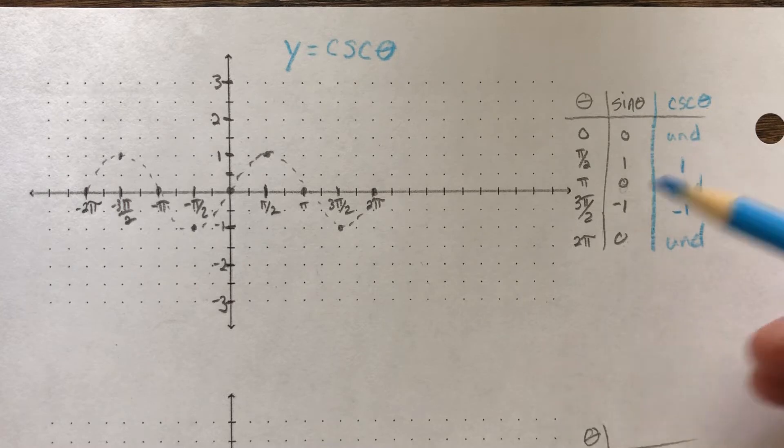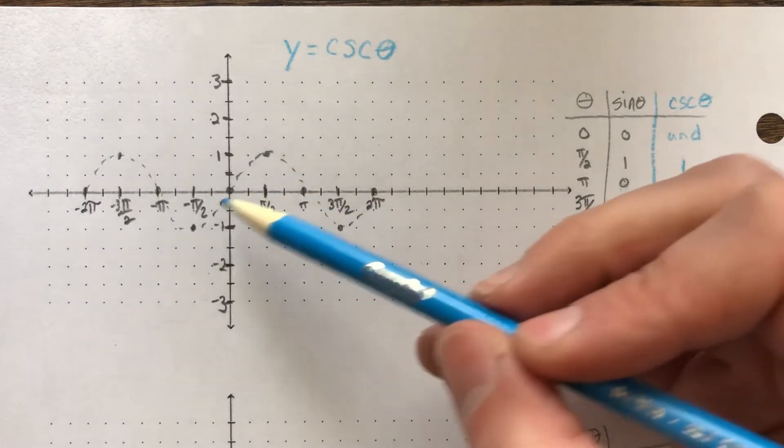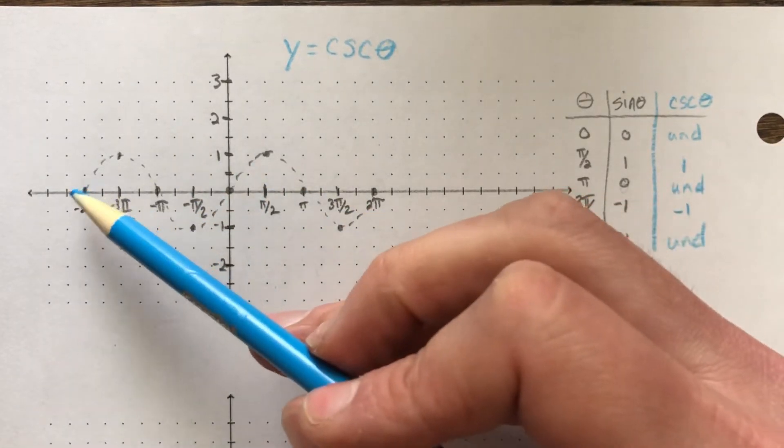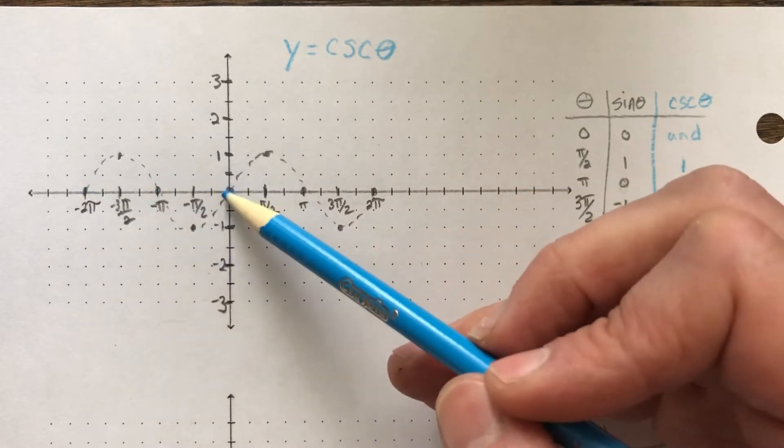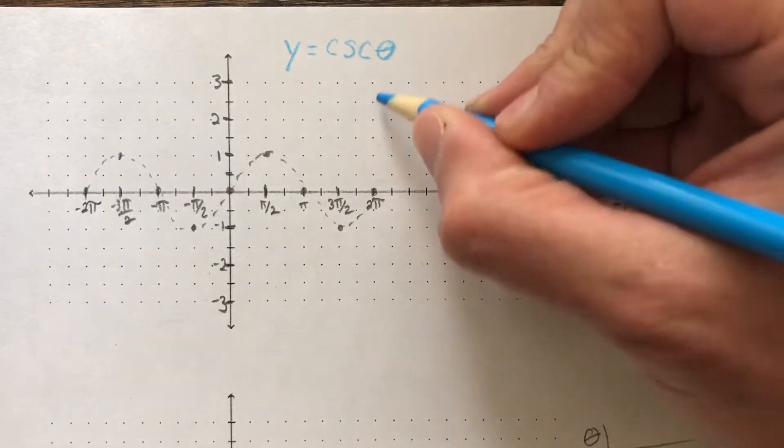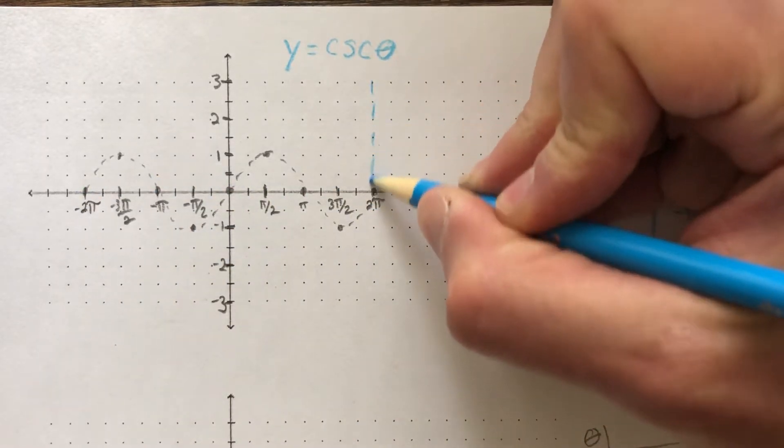So when you go to actually look at your graph, right, and the sine, wherever the sine had a 0 point, you are now going to have an asymptote because it was undefined there.